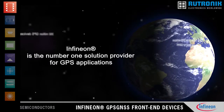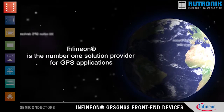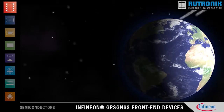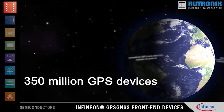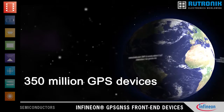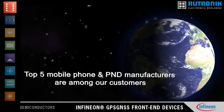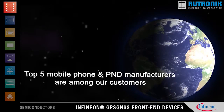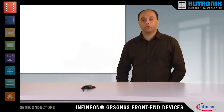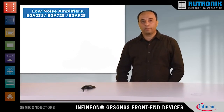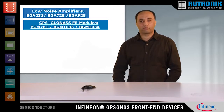Infineon is a number one solution provider for GPS applications. Till now, it has shipped around 350 million GPS devices to its customers worldwide, and the top five mobile phone and PND makers are among our customers. To cover broad application areas, Infineon provides products with different integration levels, like low noise amplifiers and front-end modules with LNA and pre-filter as well as post-filter.